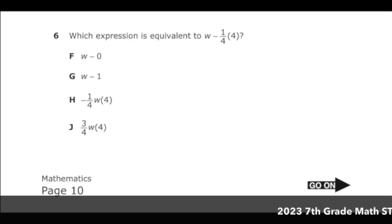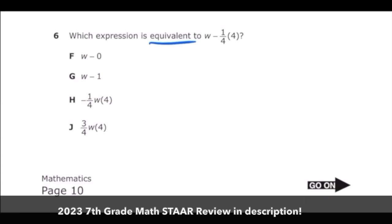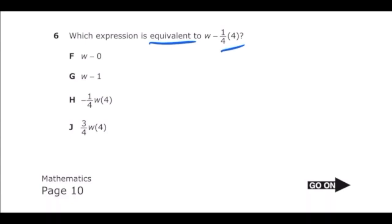This is number 6 from the 2022 6th grade math STAR test. Which expression is equivalent to W minus 1/4 times 4? Before I look at my answer choices, I'm going to go ahead and simplify this expression.